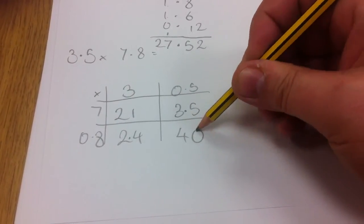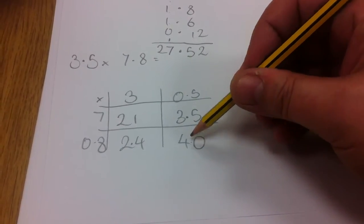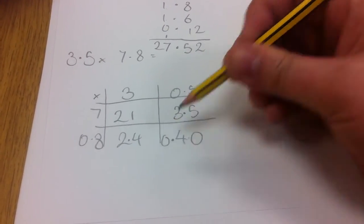5 times 8 is 40. So if we think of the pattern from before, it would be 4, 0.4.